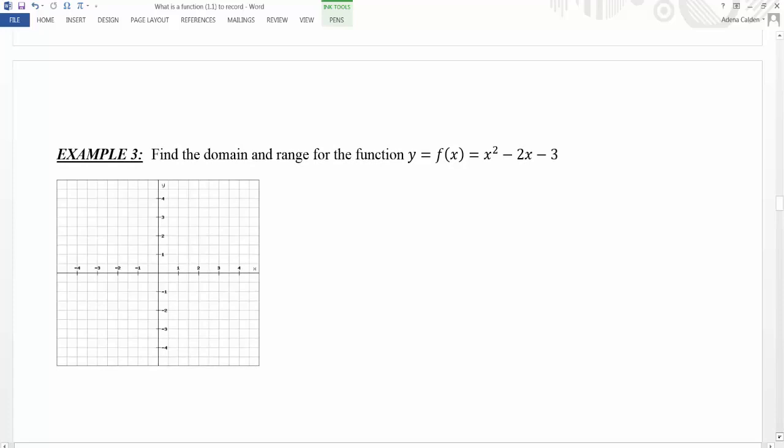So remember our formula from before, x squared minus 2x minus 3. The first thing we want to do is think about the domain. We want to consider if there's anything that we should not be plugging into this function.